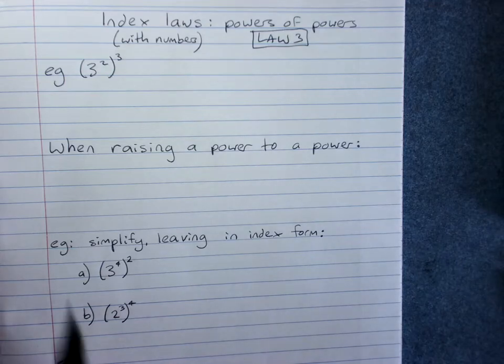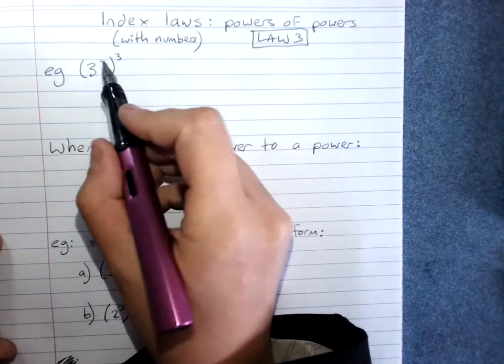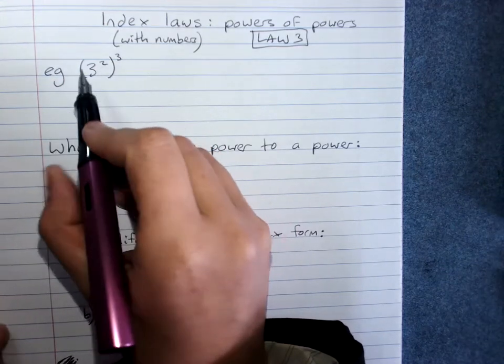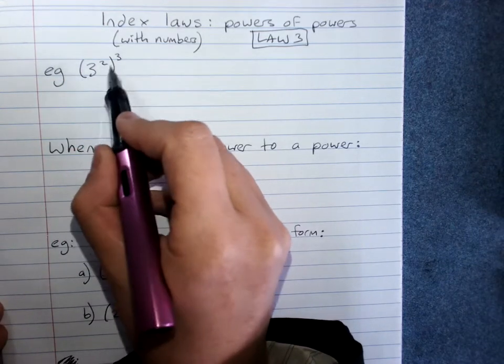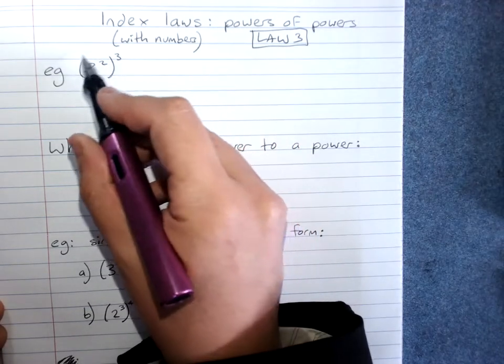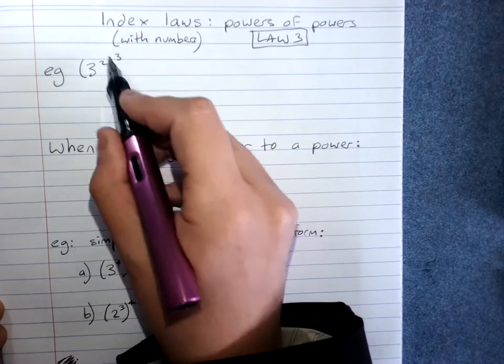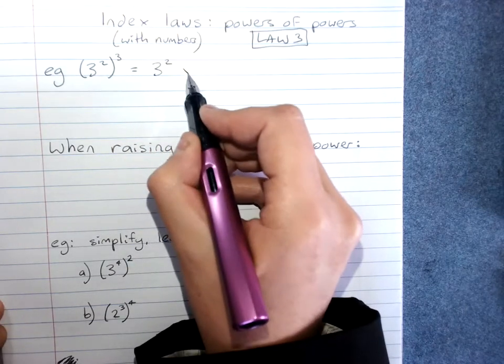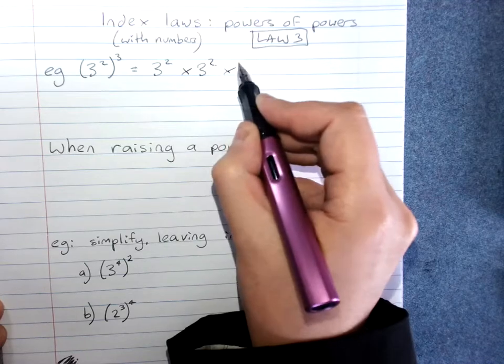As always with index laws, to work out what the shortcut is, we try expanding it. Here I've got 3 squared to the power of 3. That means 3 squared times 3 squared times 3 squared. Let's write that out: 3 squared times 3 squared times 3 squared.